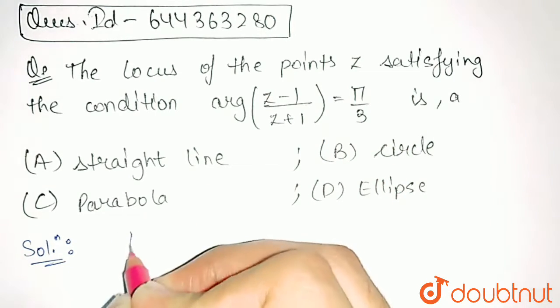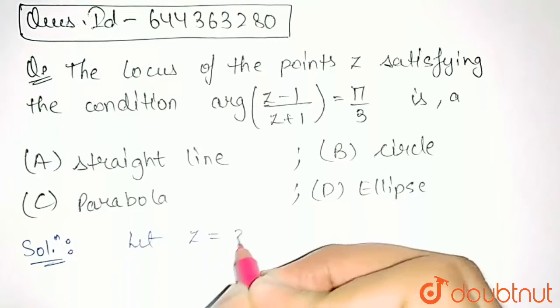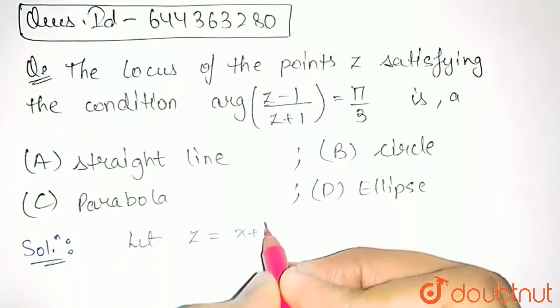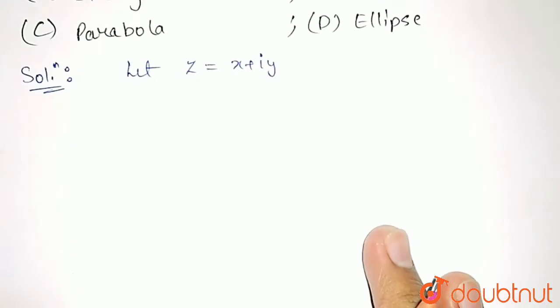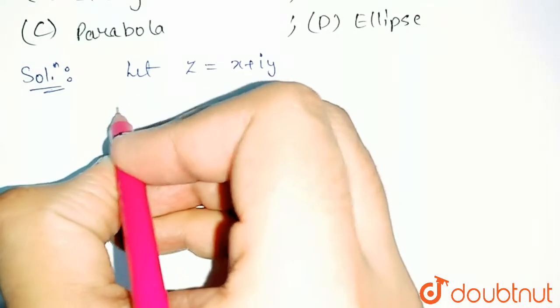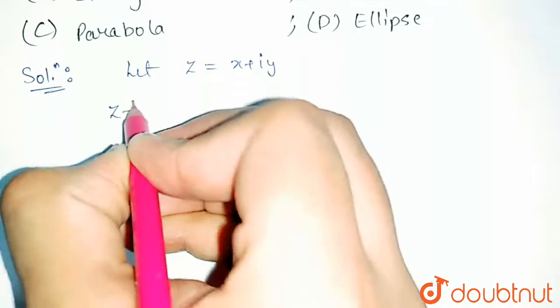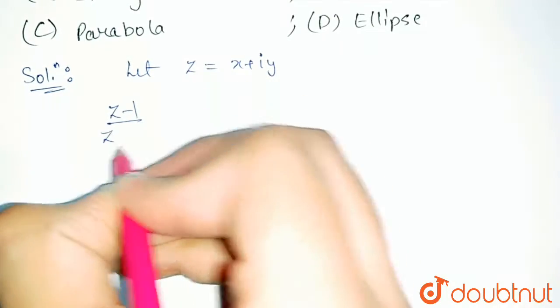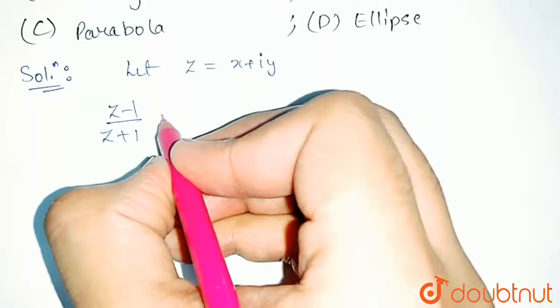So first of all, let us assume z is equal to x plus iota y. Now we will try to find out what is the value of z minus 1 upon z plus 1.